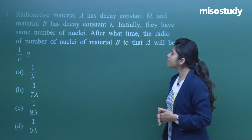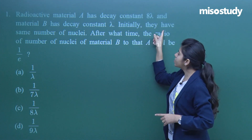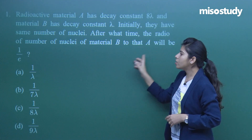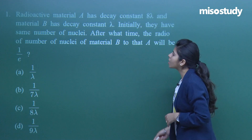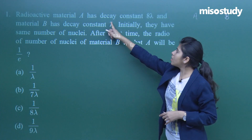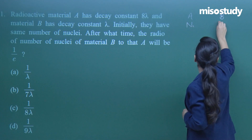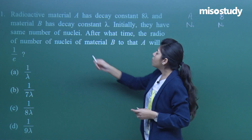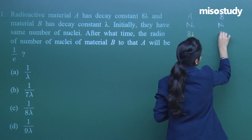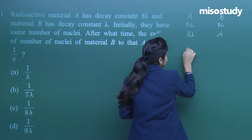In this question, radioactive material A has a decay constant 8 lambda and material B has decay constant lambda. Initially they have the same number of nuclei. After what time will the ratio of the number of nuclei of material B to that of A be 1/e? So first, material A and material B both have initial number of atoms N-not. The decay constant of A is 8 lambda and of B is lambda. We need to find time when N_B upon N_A equals 1/e.